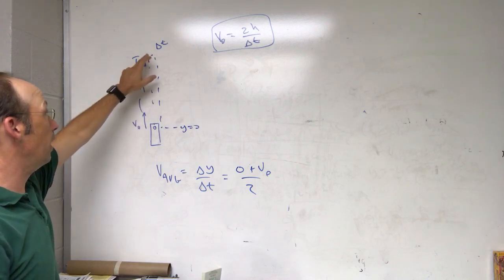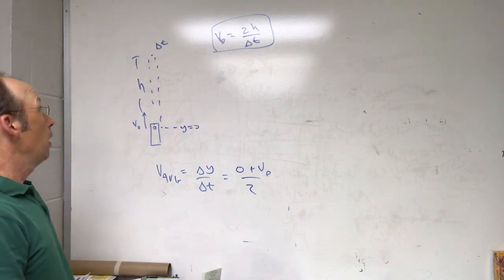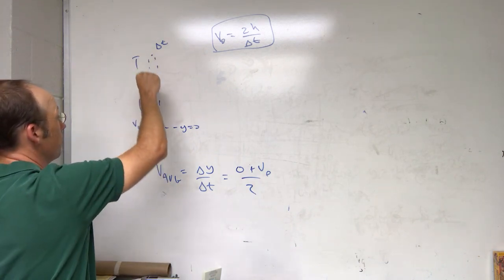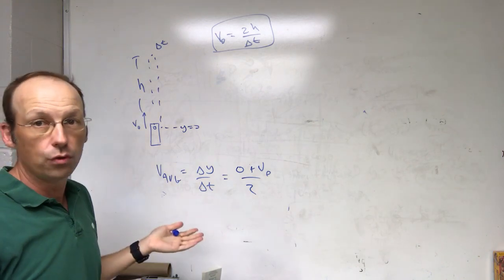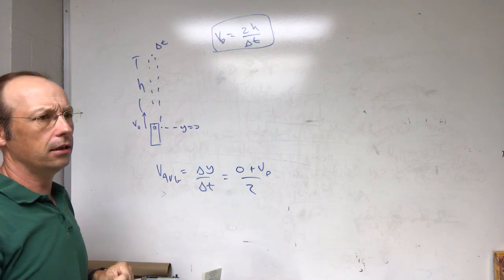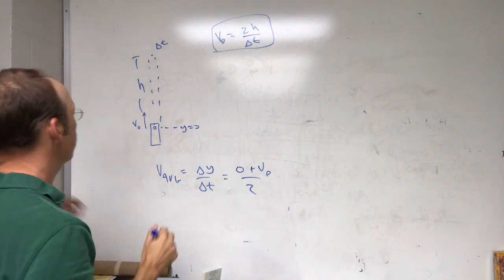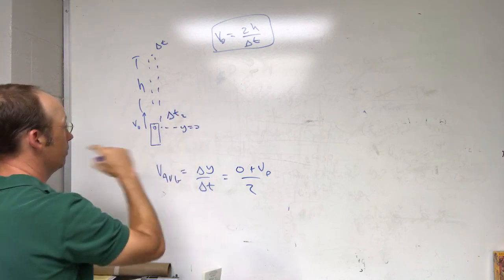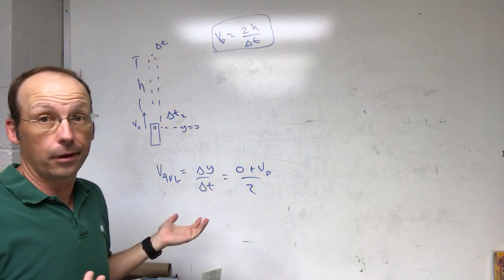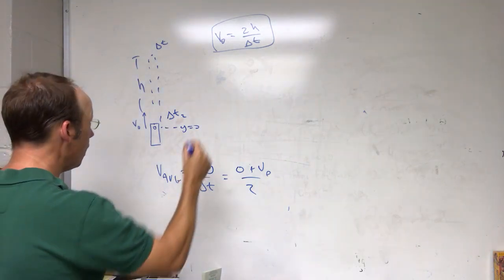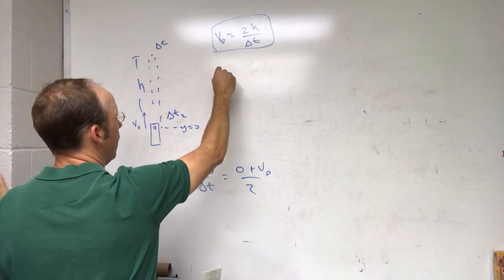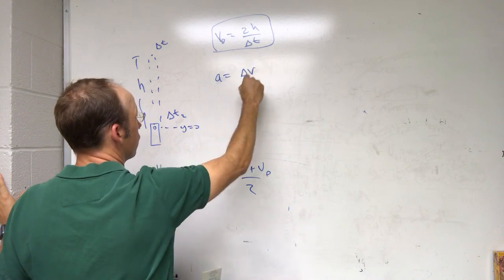There's another way: shoot the ball up and measure the total flight time — the time to go up and come back down. I'll call that delta-t₂. In this case I don't know the height, I only measured the total time. So I need a different approach.